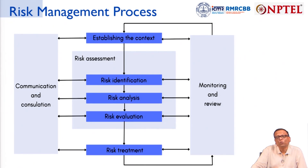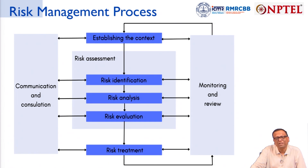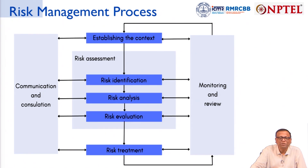Once assessment is done, risk management involves an interplay of three processes: risk assessment at the center, communication and consultation on the left, and monitoring and review on the right. This cycle proceeds through establishment of context, risk identification, risk analysis, risk evaluation, and risk treatment — then back again. Communication to stakeholders and consultations are integral, followed by continued monitoring and return to risk assessment.